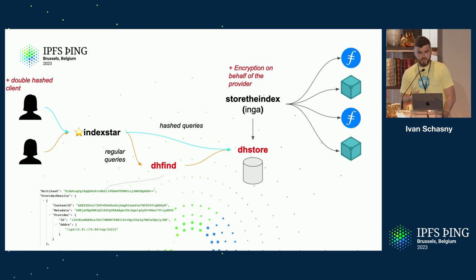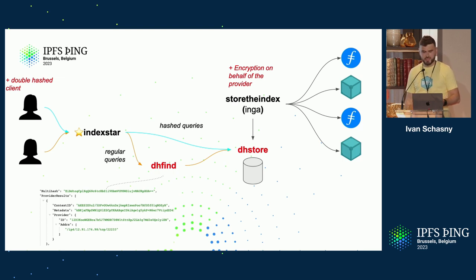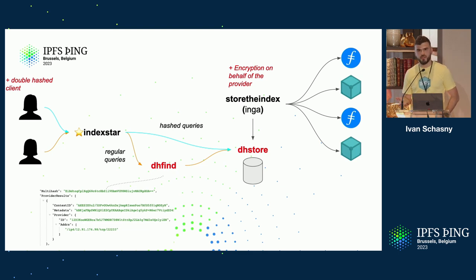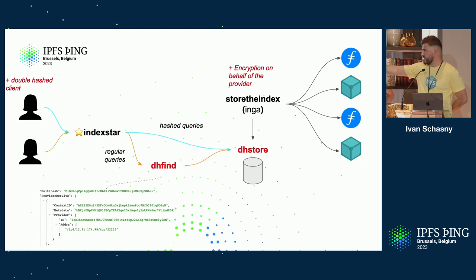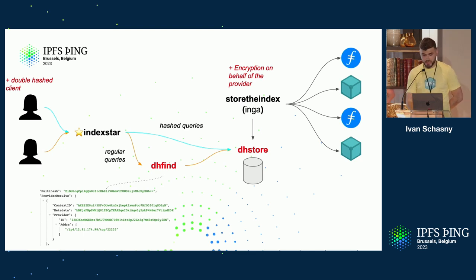We also introduced a new service called dhfind (double hash find) to support regular queries. When a regular request comes in, dhfind implements the full reader privacy workflow: it goes to dhstore, fetches all the data, decrypts it, assembles the payload, and returns it to the user. The result you see from dhfind looks exactly the same as what you'd have seen from the non-double-hashed indexer.